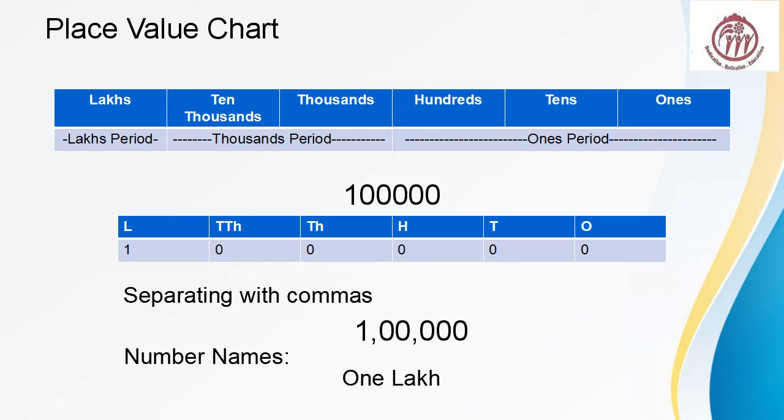In the place value chart, we start with ones, tens, hundreds. This is ones period. You know that after that: thousands, ten thousands. This is thousands period. You have studied up to here. But now 1 has no place.